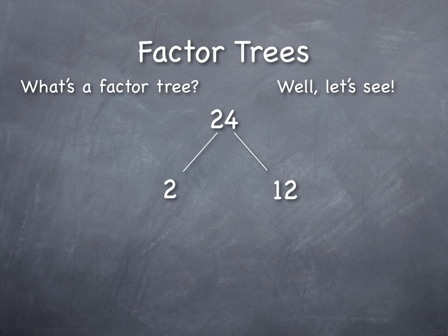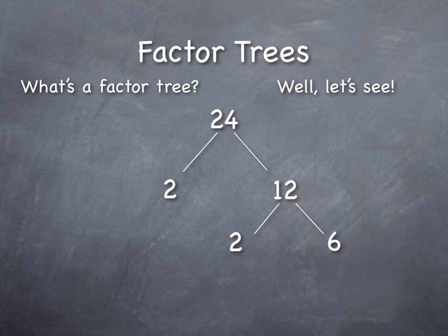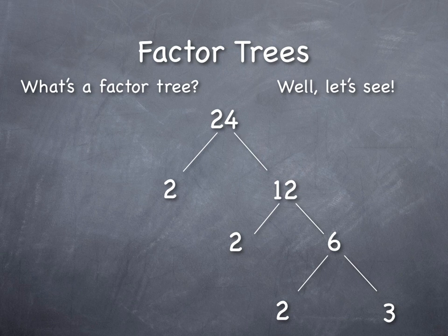And then what we might do is we might say, well, you know what? 12 can break down a little bit further, and maybe we could think of it as 2 times 6. And again, we could think of 6 as being the same thing as 2 times 3. Now, the reason I haven't broken down 2 any further into 1 times 2 is because 2 is a prime number. We're going to stop there. Otherwise, I could just keep going 1 and 2, 1 and 2, 1 and 2 forever. And we want to stop somewhere, so we stop at the prime numbers.